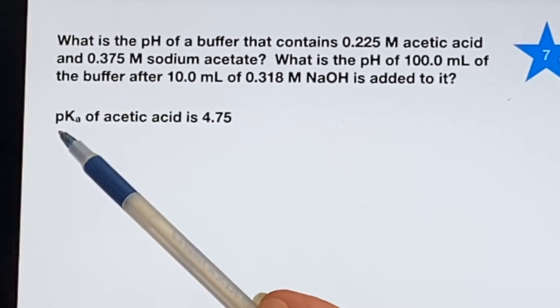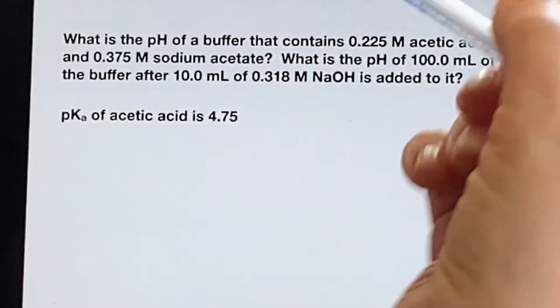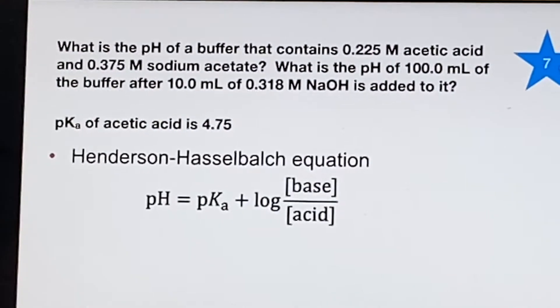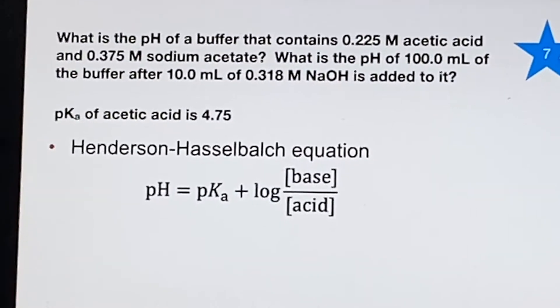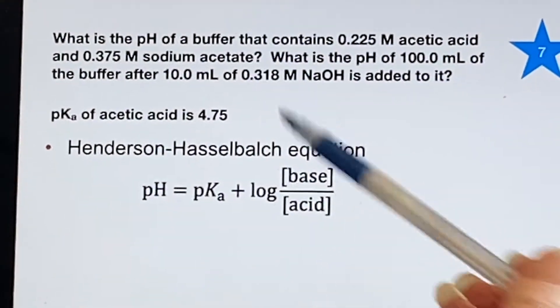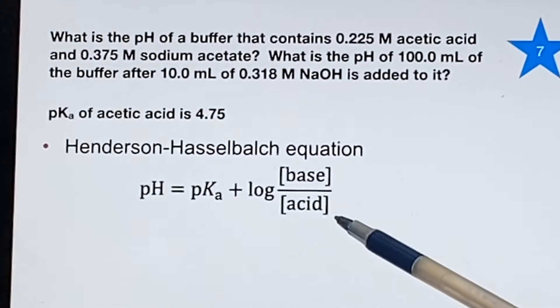They've given us that the pKa of acetic acid is 4.75. And we can say, we need to use Henderson-Hasselbalch on this because we can see that it is a buffer and Henderson-Hasselbalch works great for buffers.